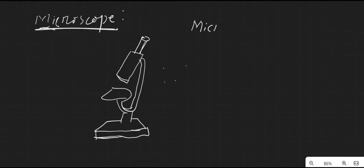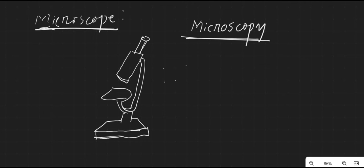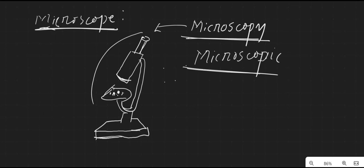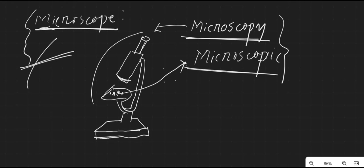There are two terms we have to be familiar with. One is microscopy. Microscopy is the science of investigating small objects and structures using a microscope. The process by which we investigate and examine small objects using a microscope is known as microscopy. Another term is microscopying — the small objects which we study using a microscope.